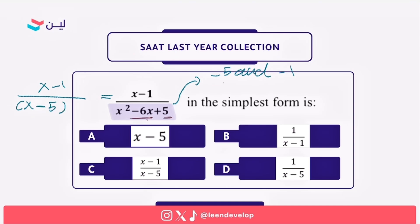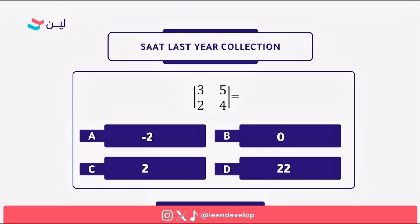The first number multiplied by (X minus 1), the second number (X minus 1) — the (X minus 1) cancels with (X minus 1), so the remaining expression is 1 in the numerator and (X minus 5) in the denominator. The answer is D.